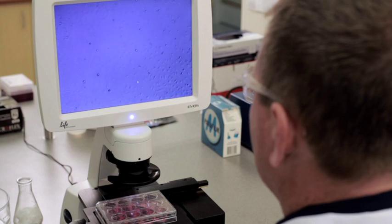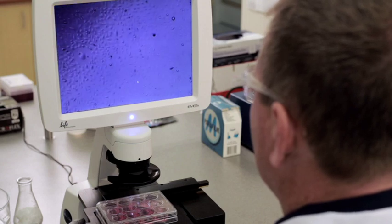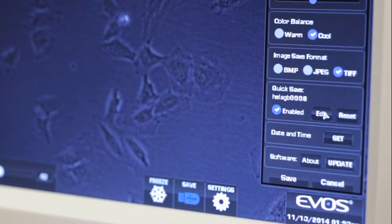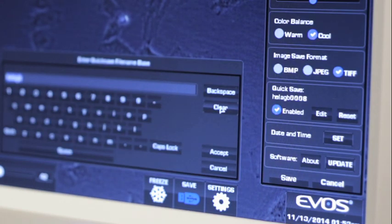The quick save enables a base file name to be established in which all images will be numbered in the order in which they were saved. To set up the base file name, go into the settings menu and select edit in the quick save section.